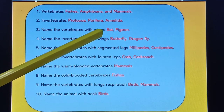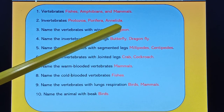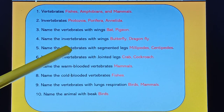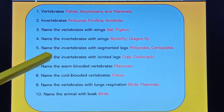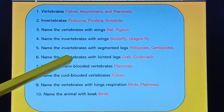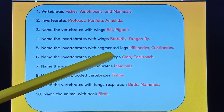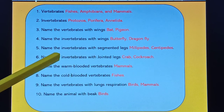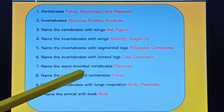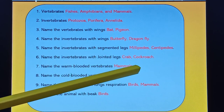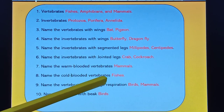Invertebrates with segmented legs include millipedes and centipedes. Invertebrates with jointed legs belong to Phylum Arthropoda — examples are cockroach and crab. Warm-blooded vertebrates are birds and mammals. Cold-blooded vertebrates are the first three classes: fish, amphibians, and reptiles.